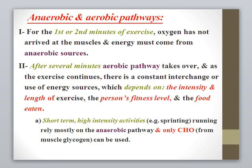What do we mean by aerobic and anaerobic pathways? When you exercise, you need energy taken from nutrients stored in the body as glycogen, fat in adipose tissue, and protein in muscles. In the first one to two minutes of exercise, oxygen has not yet arrived at the muscle — this is anaerobic because there is no oxygen. Energy must come from anaerobic sources. After several minutes, oxygen is provided to the muscle — this is the aerobic pathway, which then takes over as exercise continues.